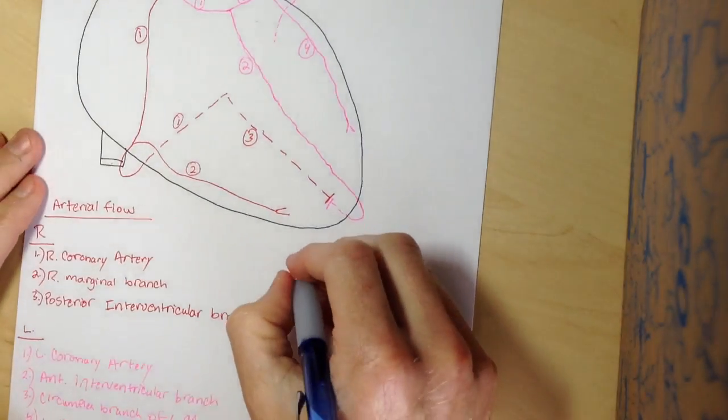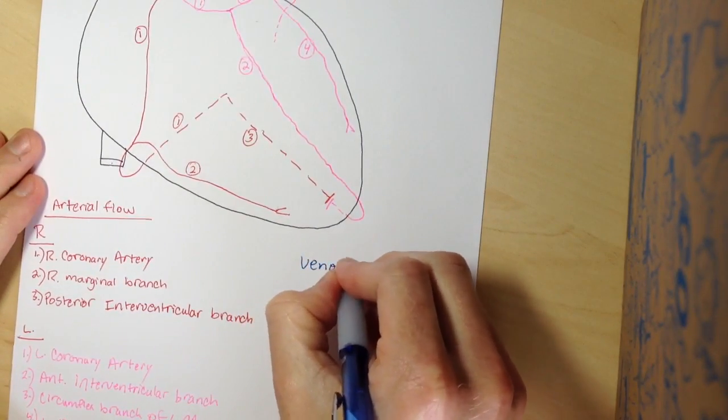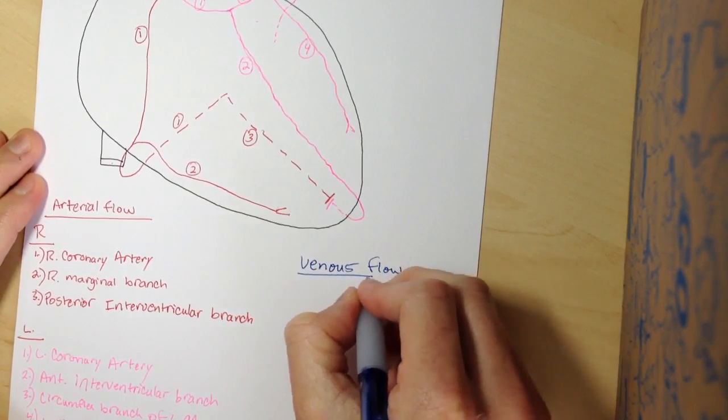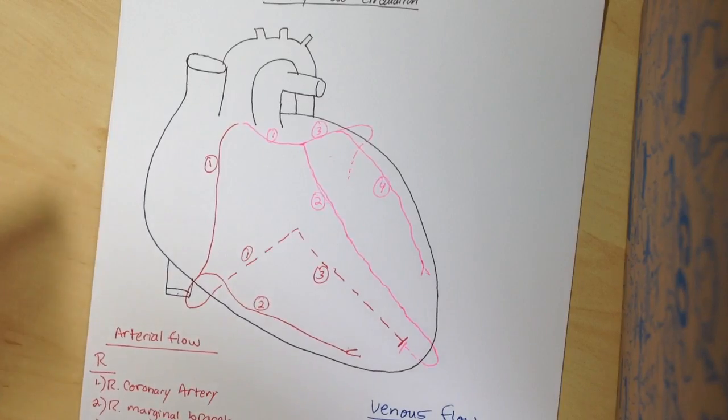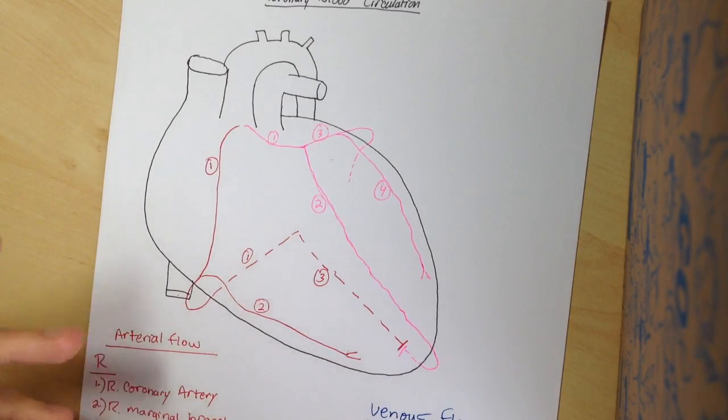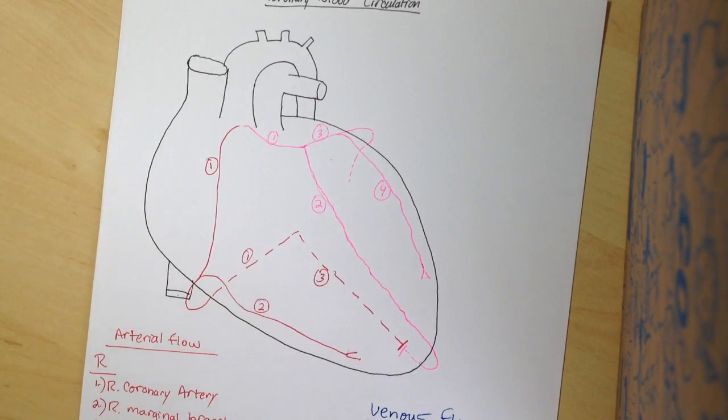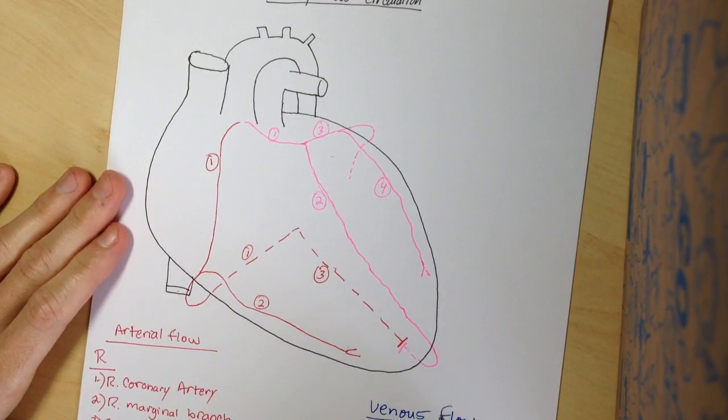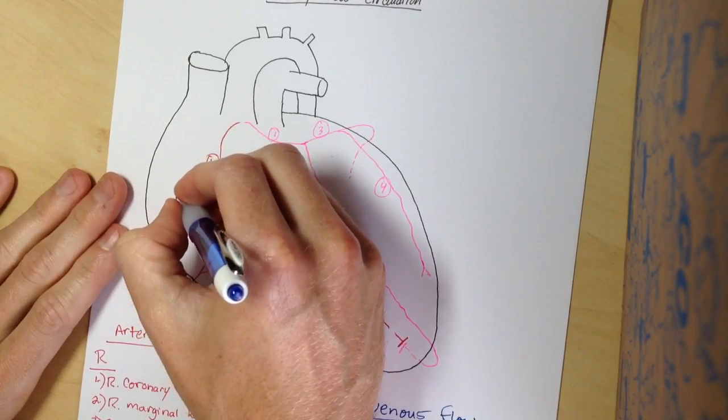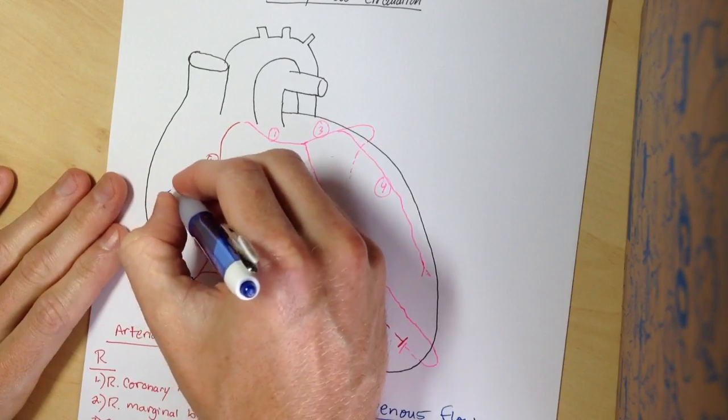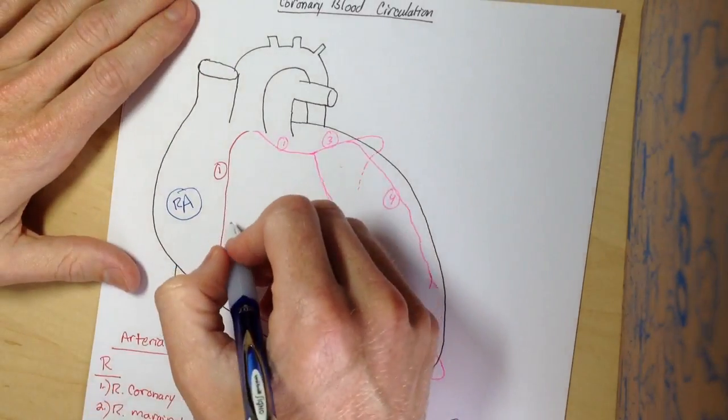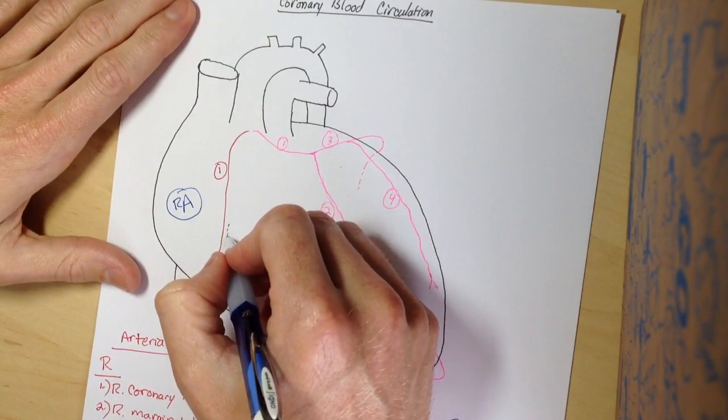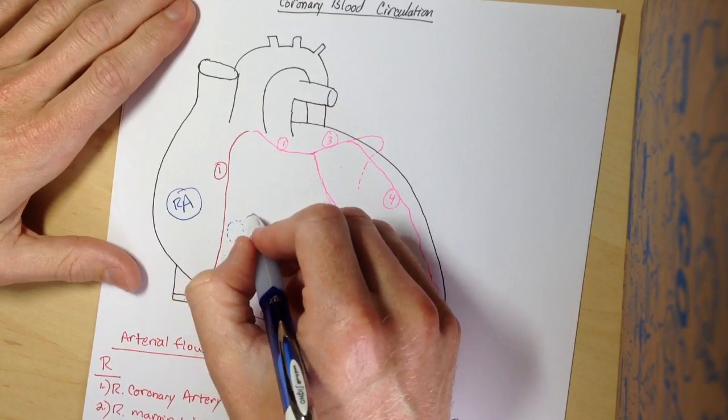That's the arterial flow. If you can do that a few times and get it down, you start to make sense of what's going on. It's really not too complicated. It's complicated, but it's simple if you memorize the diagram a little bit. With the venous flow, we have all blood, basically, no matter where it's coming from in the body, it's trying to find its way back to the right atrium of the heart. With coronary blood flow as well, we're not going to have any difference there.